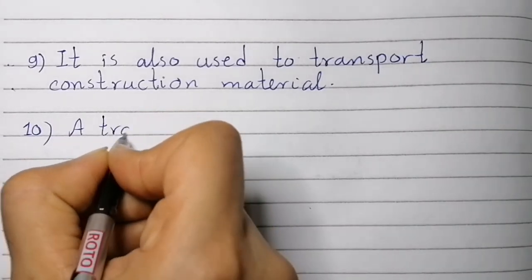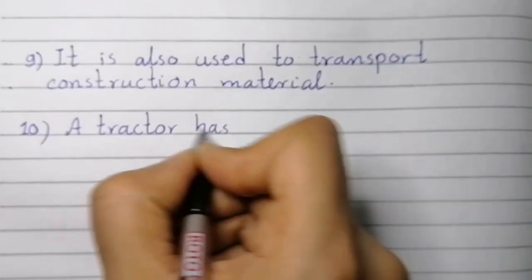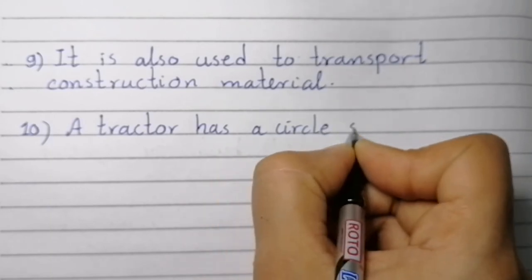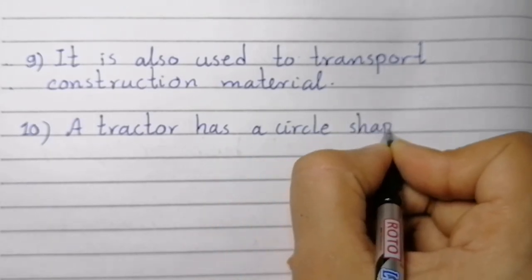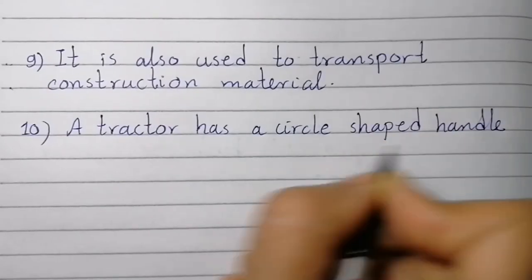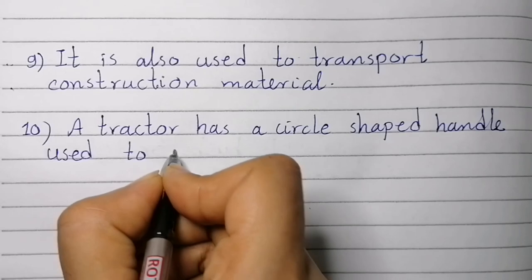Point number ten: A tractor has a circle shaped handle used to control it.